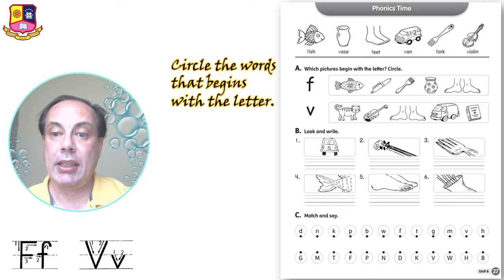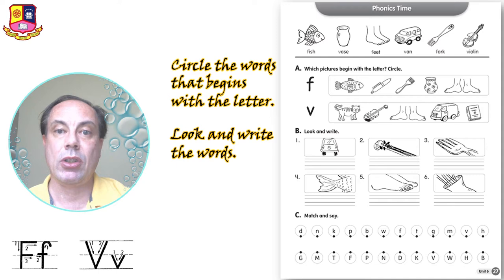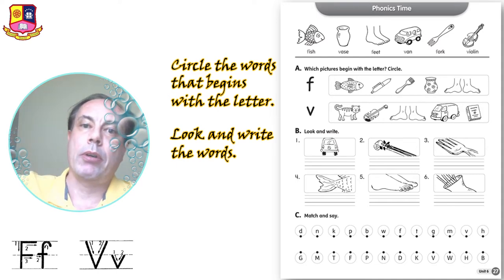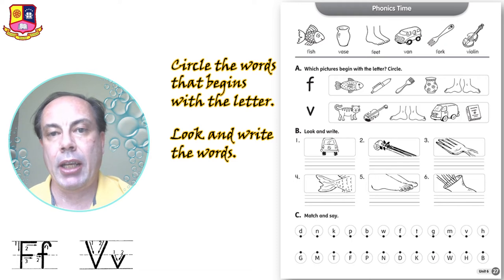Exercise B is look and write the word. So you look at the picture and you write the word. And you can look at the top of the page, you have help at the top of the page.